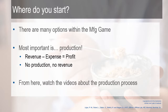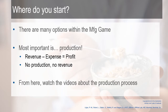There are many options within the manufacturing game for strategy, but my recommendation is that you do not pay attention to all those distractors — all the different items you can be doing like changing prices or doing marketing. Focus on production. Revenue is your sales minus your expenses, and that equals profit. If you have no production, you have nothing to sell and no revenue. So watch the videos about the production process, practice it, get your production down, and then start thinking about various strategies.